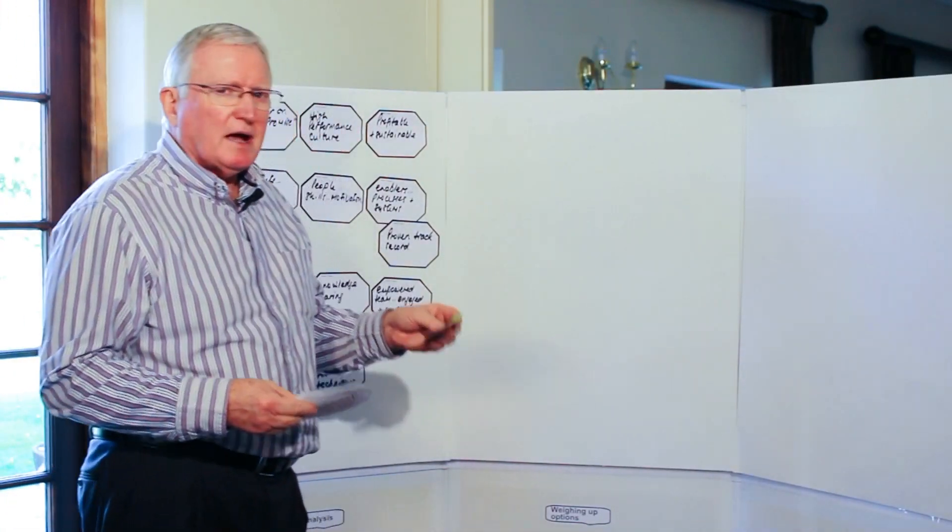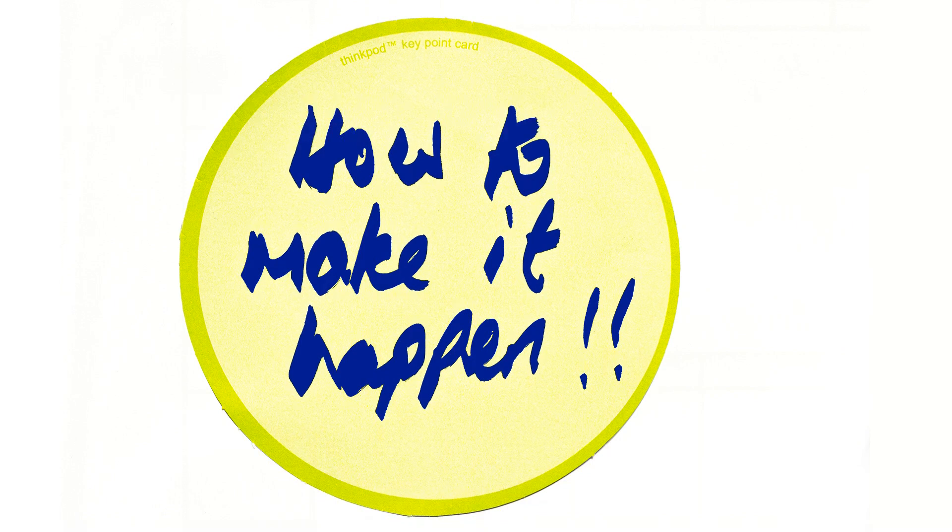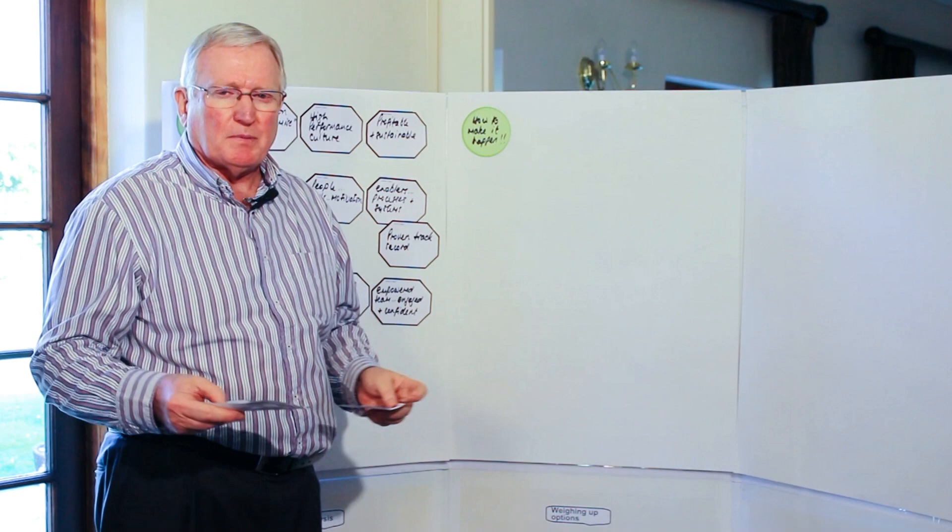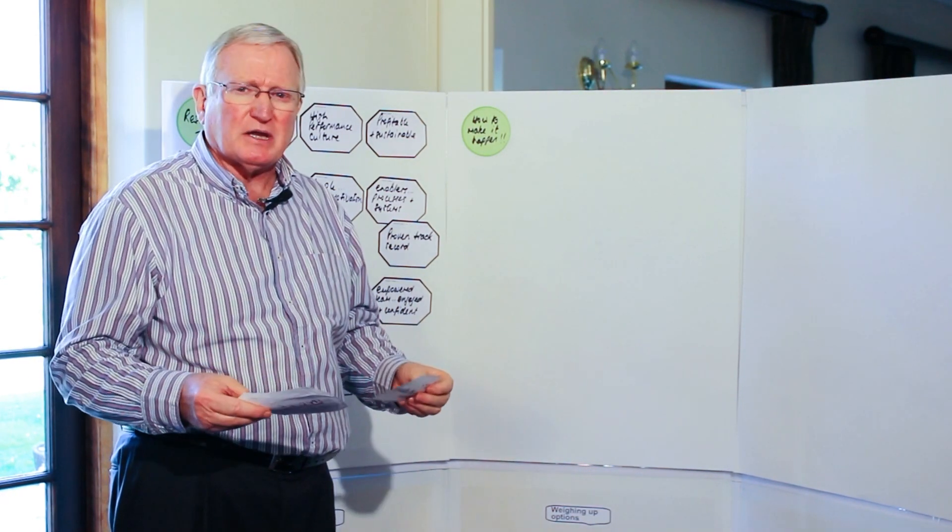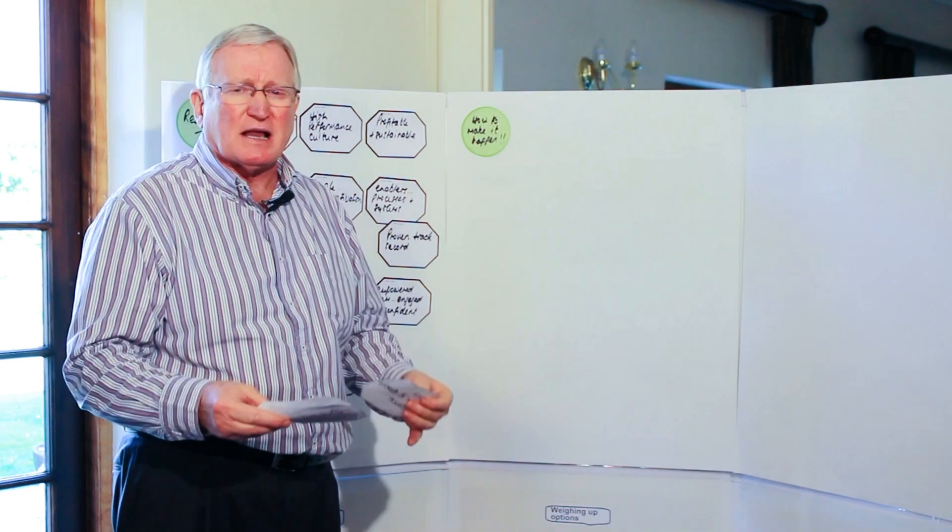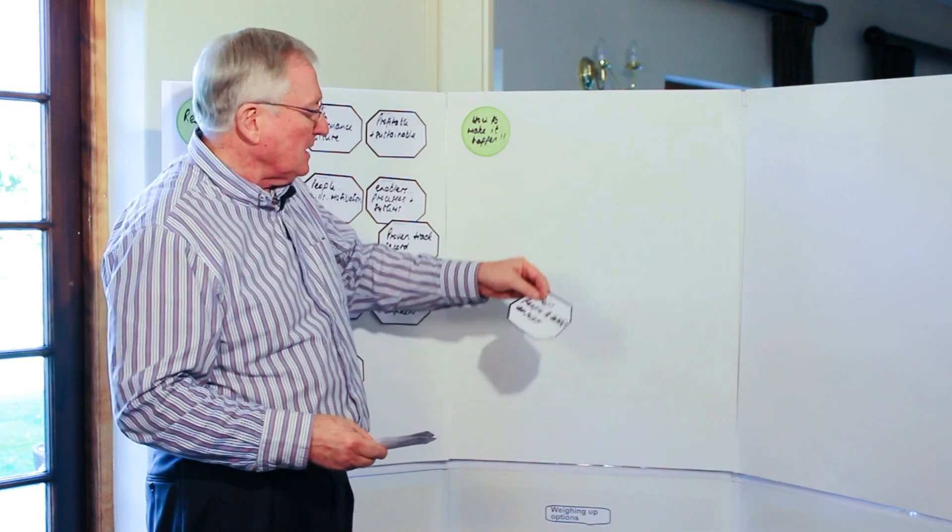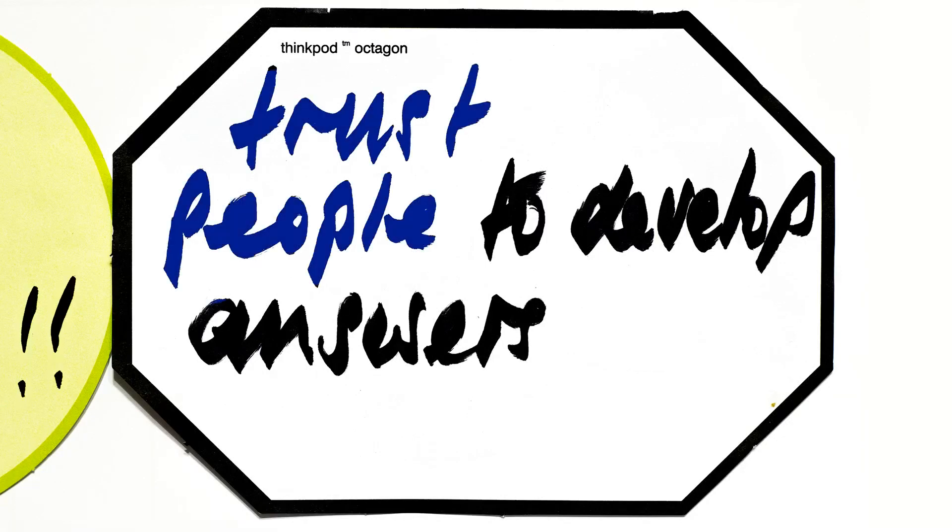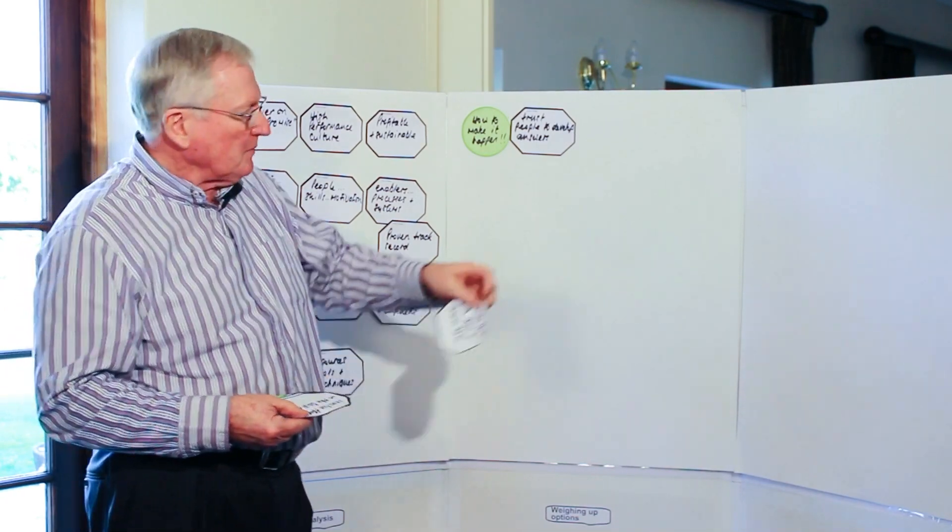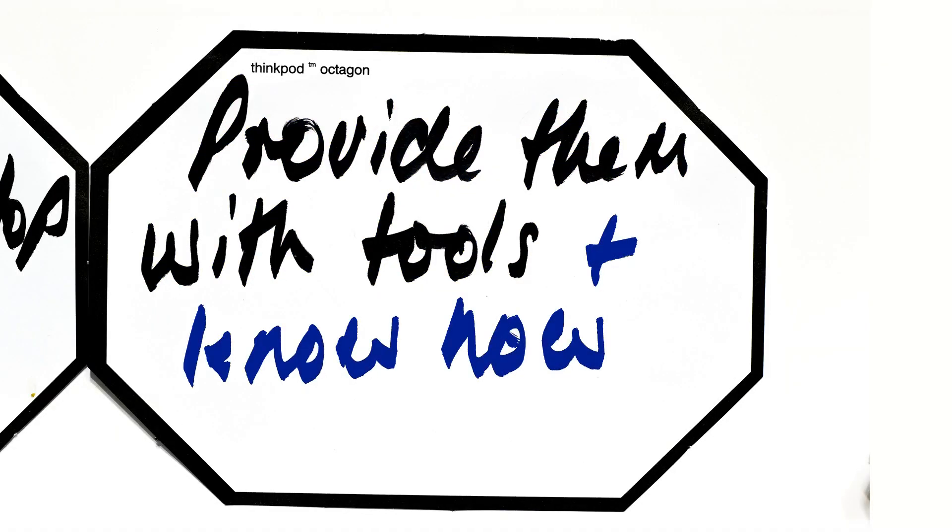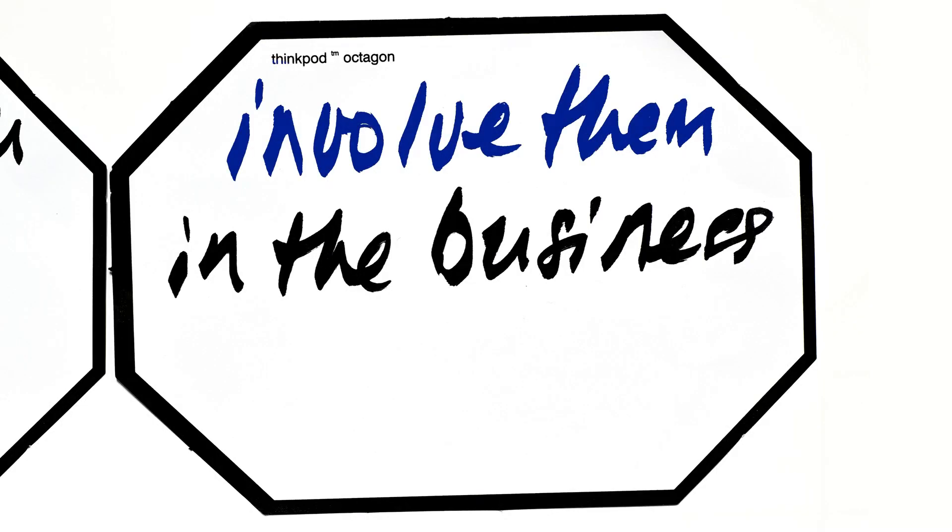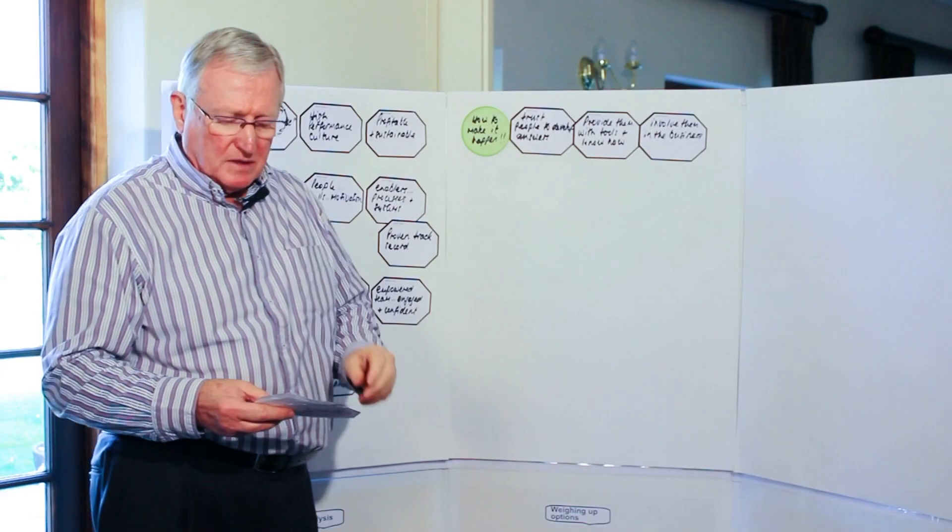So the question now is how to practically make this happen. And essentially what we have found in working with people, particularly facilitating workshops, is that Generation X and Generation Y today are saying involve us in the business, engage us, give us a challenge, make us feel part of this business. And so what that says is we really do have to increasingly trust our people to develop the answers that we want. But we also do know we must give them the right tools and make sure they have the know-how to be able to do this and then figure out ways in which we can increasingly involve them in the business.